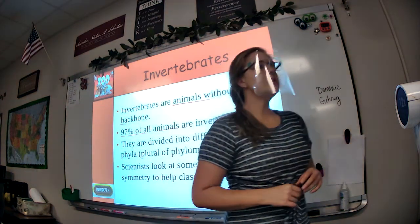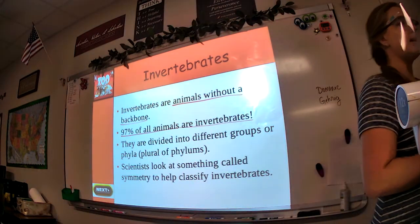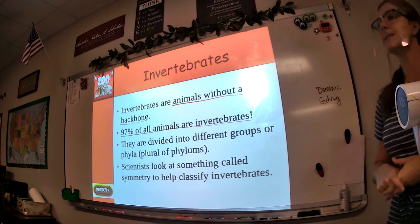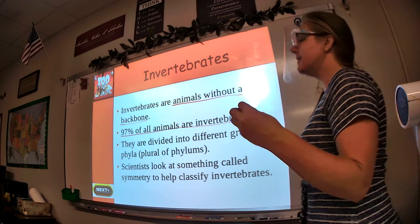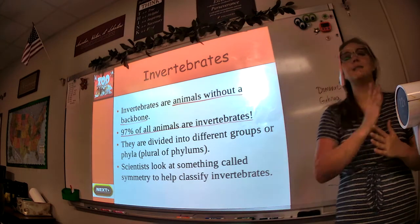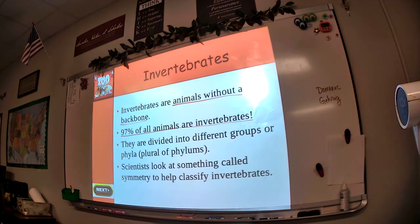We mentioned symmetry when studying the poem The Tiger. But symmetry is an art word that has to do with how the animal is shaped — is it similar on different sides of its body? There are three kinds of symmetry that we're going to talk about next in your notes.